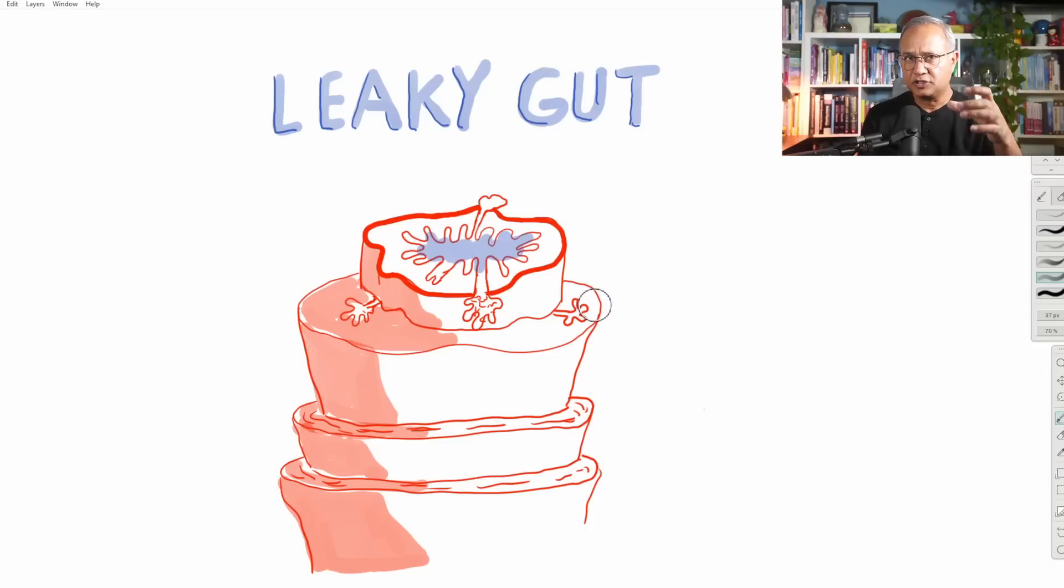To understand the leaky gut, first of all, what we have to understand is that there is a lining of the intestine. So if you look into your mouth, the cells that are lining the lumen or the cavity of the mouth, these cells are called epithelial cells. Our intestinal structure, the wall, is made up of many layers. So the most internal layer, this layer that I am drawing on right now, this is the inner lining cells that are facing the lumen.